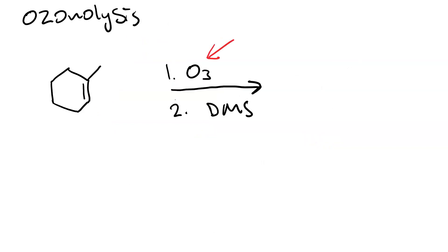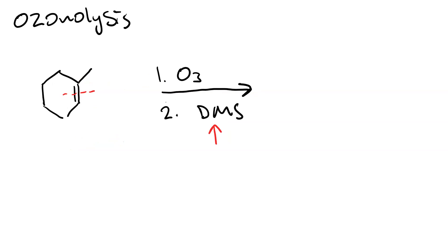When your reagent is first ozone, O3, followed by the mild reducing agent DMS, you get ozonolysis, which cleaves the pi bond. And then the two sp2 hybridized carbons become carbonyls. In this case, we're cyclic, so we're only going to get one product instead of two fragments. It helps to number the carbons in the alkene.